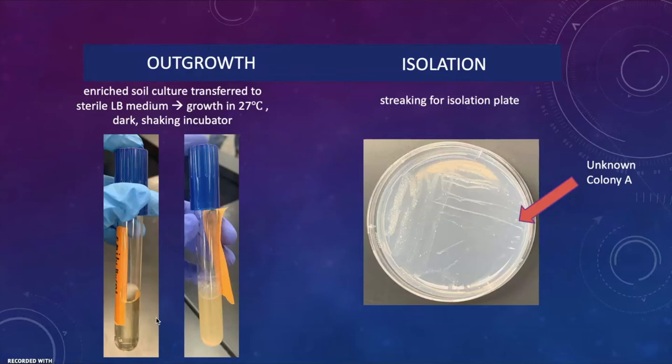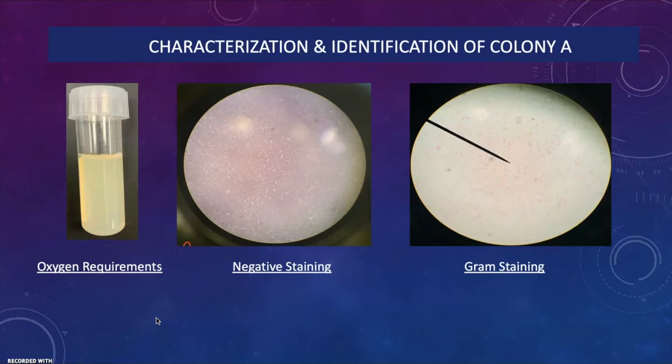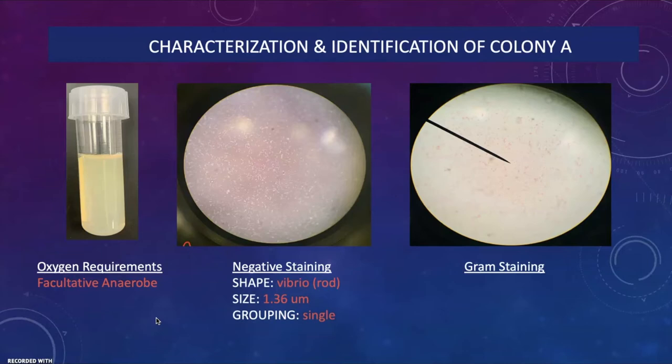The characterization of colony A took a series of different steps to determine each specific characteristic. For oxygen requirements, the colony was found to be facultative anaerobic. Negative staining found the shape was vibrio, the size was 1.36 micrometers, and the grouping was single. Gram staining found it was gram negative, with a size of 1.25 micrometers, and a capsule was very likely present due to the size difference between the negative staining and gram staining.